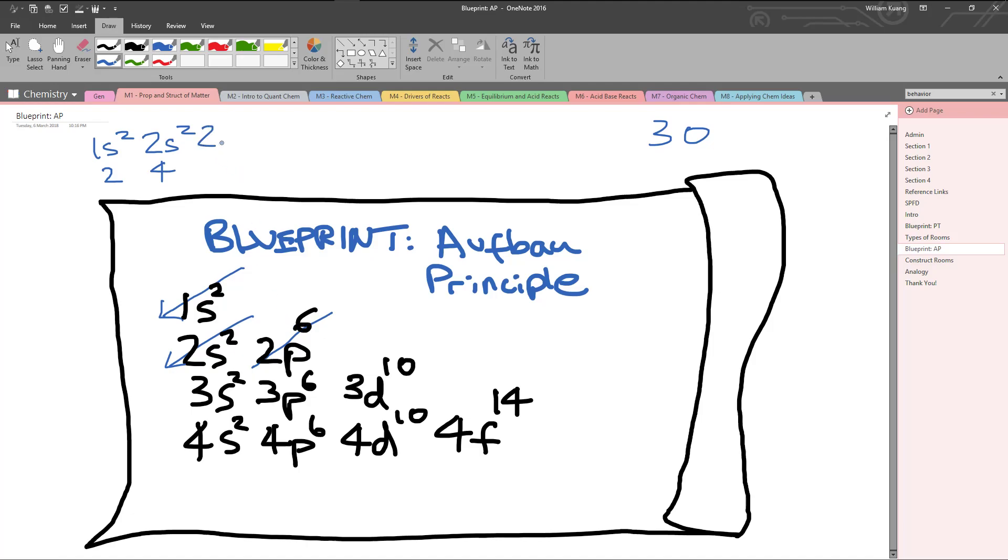Then you move 2p6. Now 6 plus 4 gives us 10. Then we have 3s2. So I'm going to add 2 to 10 to give me 12. Then we have 3p6, and I'm going to add 6 to 12 to give me 18. Then we have 4s2, and then 2 plus 18 gives us 20. Then we have 3d10, and then 10 plus 20 gives us 30, and that's exactly what we want. Just remember that if you had more electrons, say for example you had 31 and you were gallium, you would have to go into the next room to put that electron, and that would be 4p1. But because we have 30, we end here.